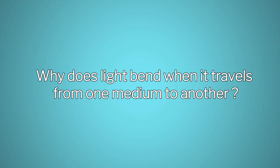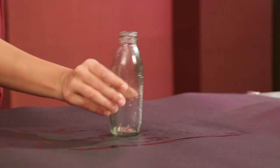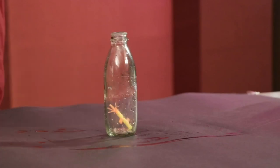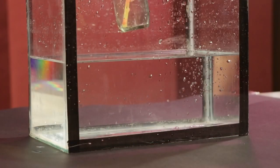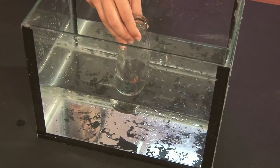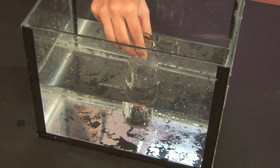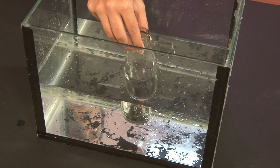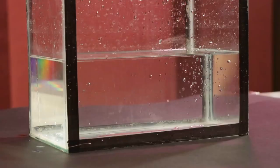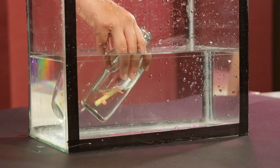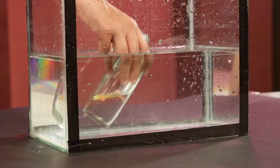Why does light bend when it travels from one medium to another? Here is a glass bottle. I will place a model of an aquatic plant inside the bottle. Now observe carefully what happens when we place the bottle inside the water without dipping it fully. I can see that the bottle is visible but the aquatic plant is not visible. What will happen if I fill the bottle with water and then place an aquatic plant inside?